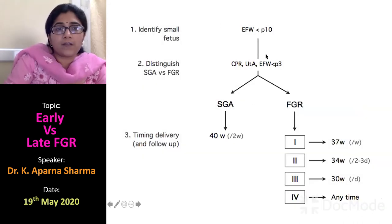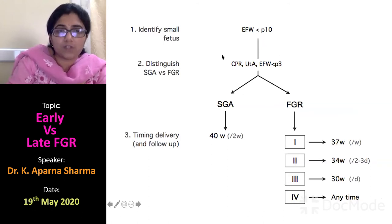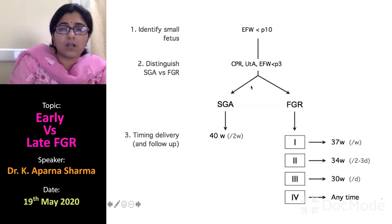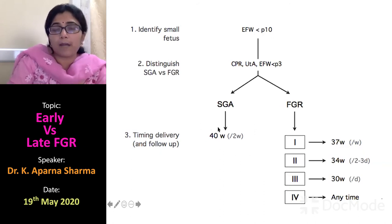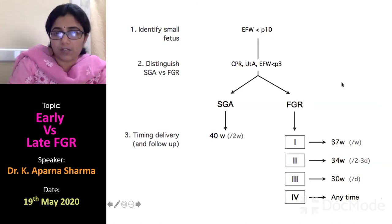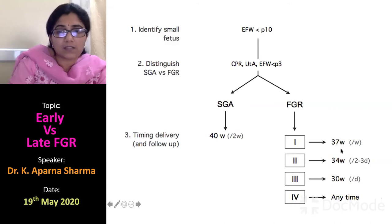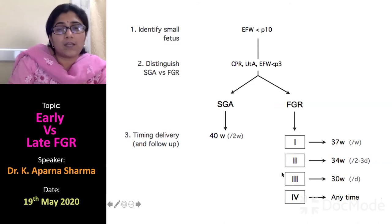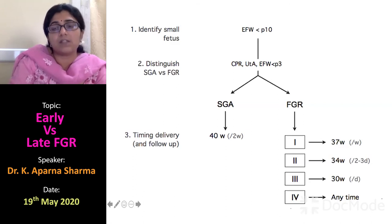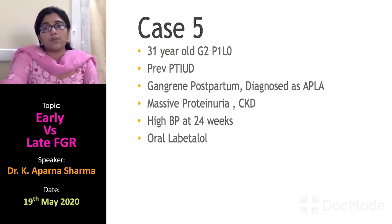Summary algorithm: identify a small baby, then distinguish between SGA and FGR. If a small baby has Doppler abnormalities, it is FGR; if not, it is SGA and can be monitored biweekly until 40 weeks. Stage one FGR — only Doppler abnormalities — deliver at 37 weeks. Stage two — AEDF — do not go beyond 34 weeks. Stage three — REDF — do not go beyond 30 weeks. Stage four — DV reversal — deliver any time once diagnosed.